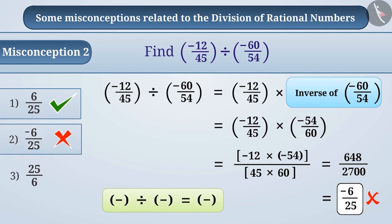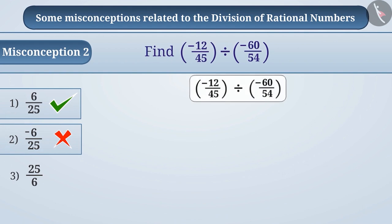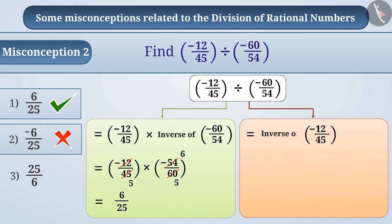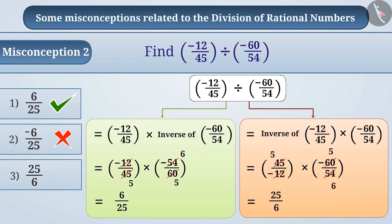So, option 2 is the wrong answer. Some children think that while performing division, keeping the first number exactly the same and multiplying it by the inverse of the second number and taking the inverse of the first number and keeping the second number as it is are both the same. So, they solve the division by taking the inverse of the first number in such a way that they get 25/6, which is wrong.